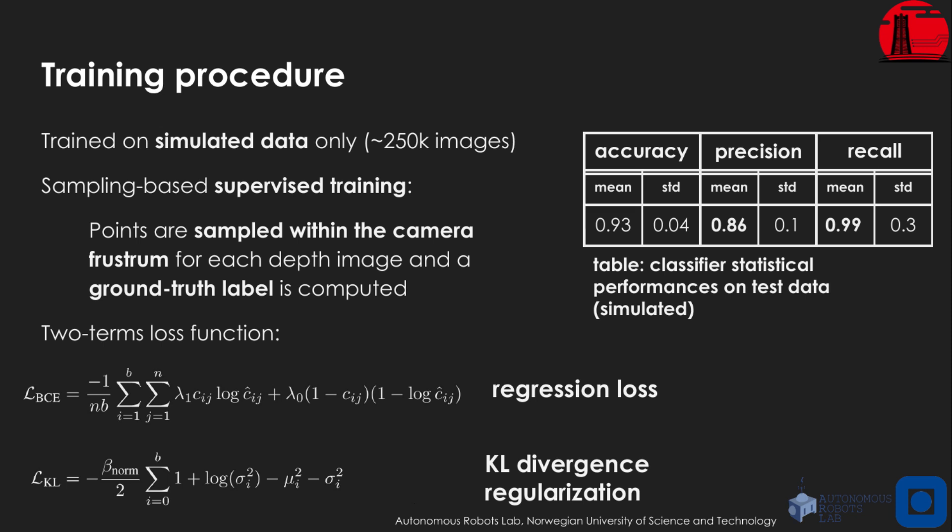The training loss function is defined as a weighted sum of two terms. First, a binary cross-entropy loss is computed between the output of the network and the ground-truth label in order to achieve regression. The second term is a Kullback-Leibler divergent regularization loss computed on the latent output of the variational encoder. The binary cross-entropy term is weighted such that collision samples are given more importance in the training in order to reduce the amount of false negatives.